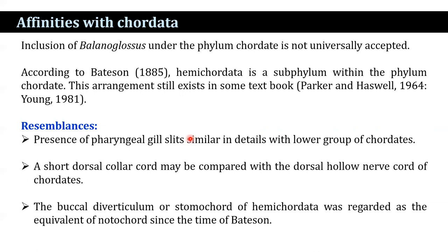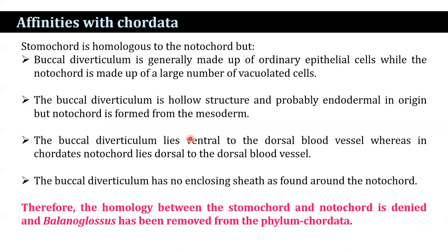Resemblances include: the presence of pharyngeal gill slits similar in detail to lower groups of chordates, and a dorsal collar cord comparable to the dorsal hollow nerve cord of chordates. The buccal diverticulum or stomochord of Hemichordata was regarded as equivalent to the notochord. However, differences exist: the buccal diverticulum is made up of ordinary epithelial cells while the notochord is made up of large vacuolated cells; the buccal diverticulum is hollow and probably endodermal in origin whereas the notochord is mesodermal; the buccal diverticulum lies ventral to the dorsal blood vessels whereas the notochord lies dorsal to the dorsal blood vessels; and the buccal diverticulum has no enclosing sheath as found around the notochord. Therefore, the homology between the stomochord and notochord is denied, and Balanoglossus has been removed from phylum Chordata.